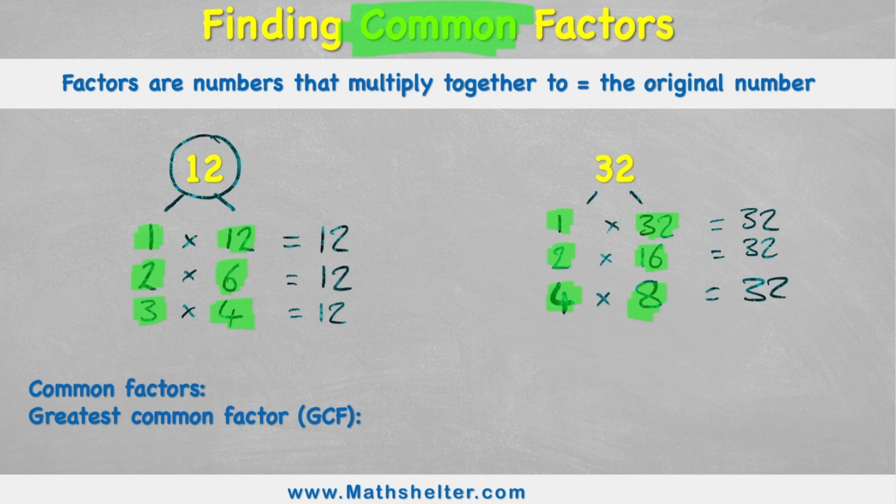So now that I've found my factors of each of them, let's try and find the ones that are in common, the ones that are the same in both. Well I can see I have 1 in both, I have 2 in both, and I have 4 in both sets of factors.